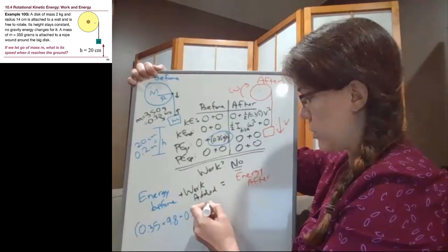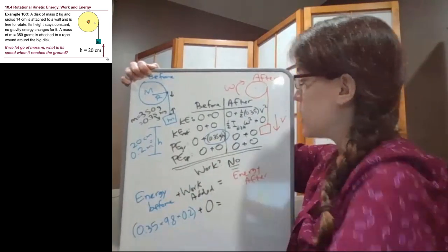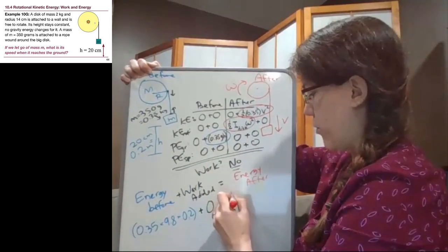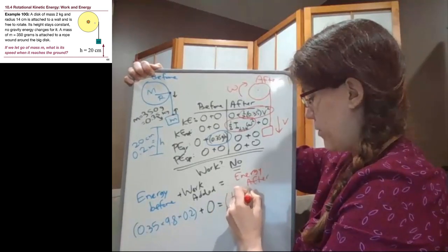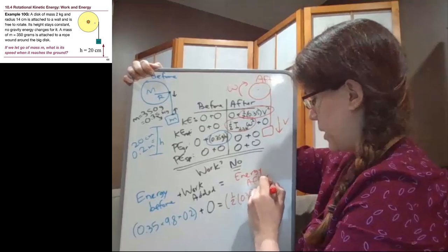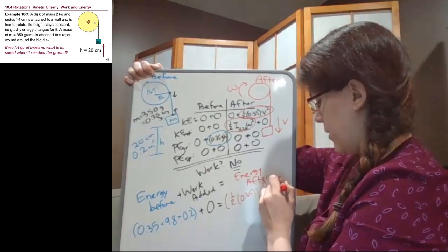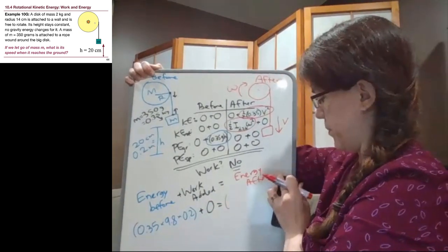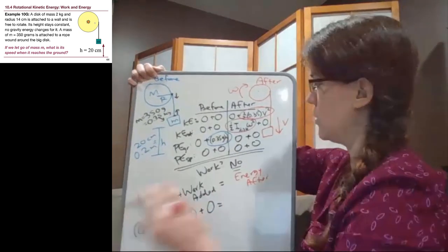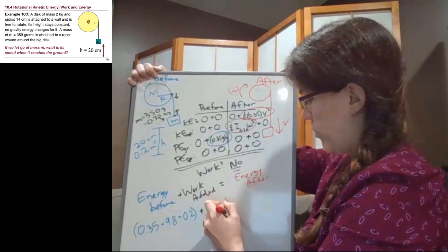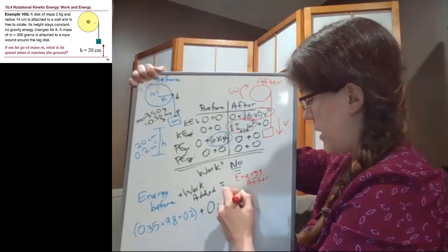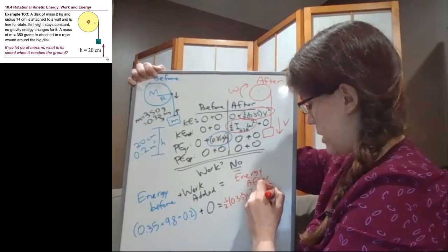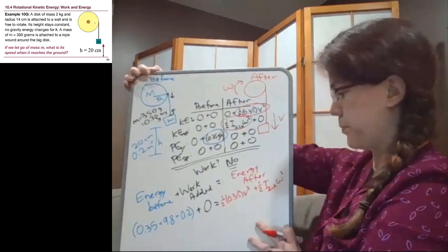Then since our work added term says no, we have zero. And then for energy after, we have two terms. I'm going to write them out as they stand here. We have one half times 0.35 times V squared plus one half I of the disk - I'm going to try that again so I don't run out of space. We have one half times 0.35 times V squared plus one half I, moment of inertia of the disk, times omega squared.